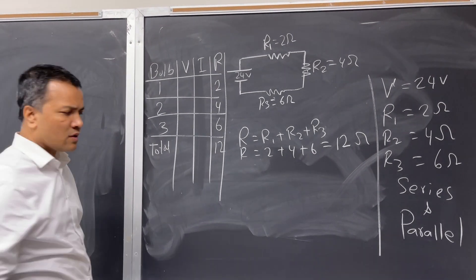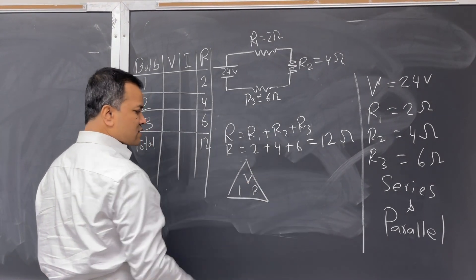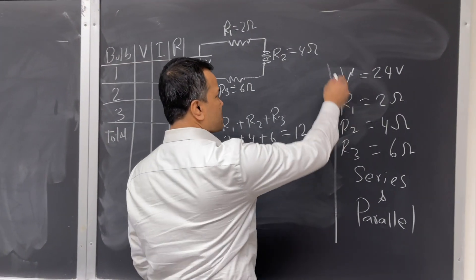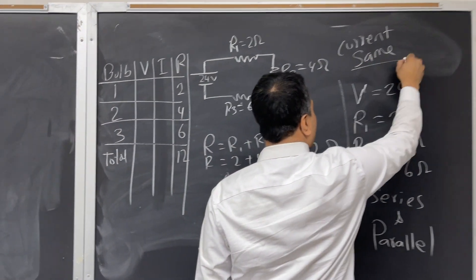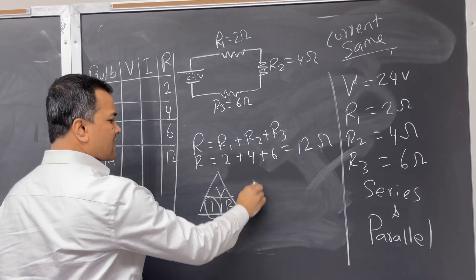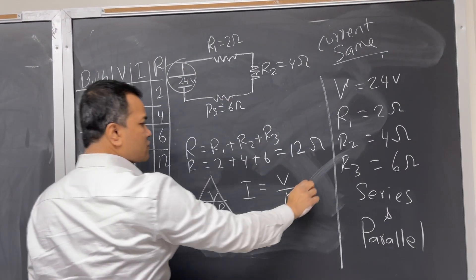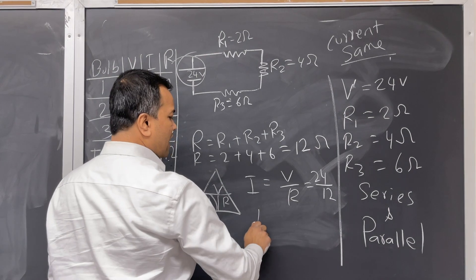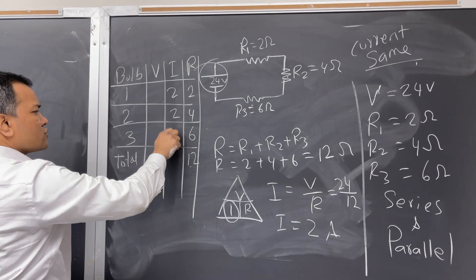Now we use Ohm's law. The current is the same in a series circuit. Using I equals V over R, the current is 24 over 12, which equals 2 amps. So the current for bulb 1, bulb 2, and bulb 3 is all 2 amps, and the total is also 2 amps — because in a series circuit I1 equals I2 equals I3.